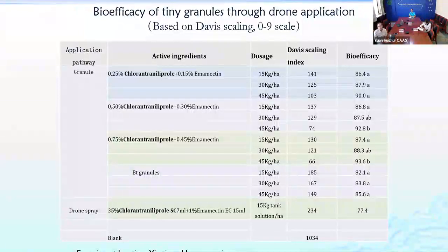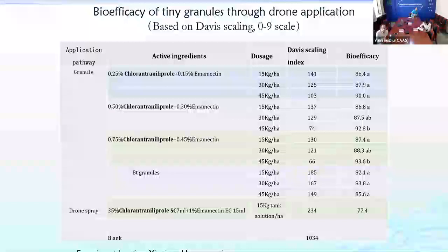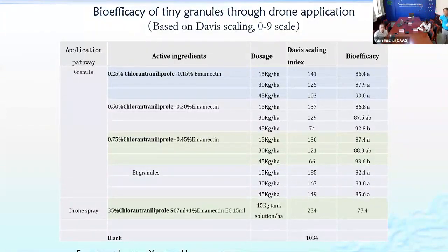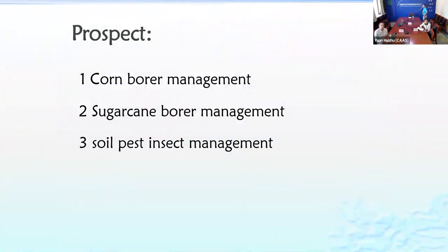For the control effect: with granule application, the control effect is more than 80%, but with conventional dual spray, the control effect is only 77%. So granule application is better. Besides FAW management, the tiny granule technology can also be used for corn borer, soybean borer, and soil pest insect management.